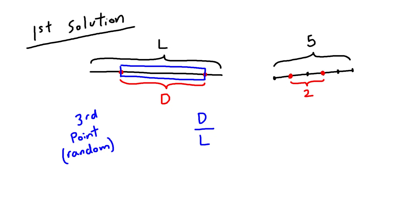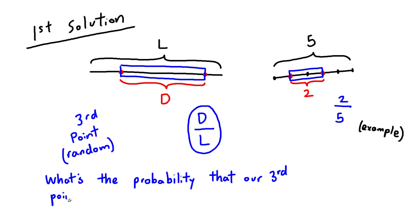L is 5 and D is 2, and as you can see, two of the five mini-segments are in between the two red dots. Therefore, the probability of the blue dot being there is 2 over 5. So we've answered our question, D over L.